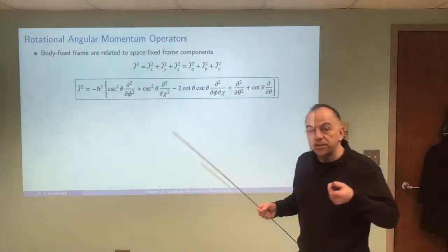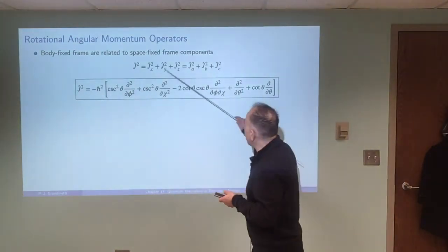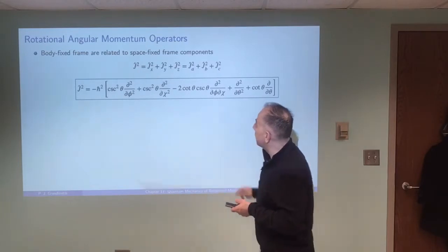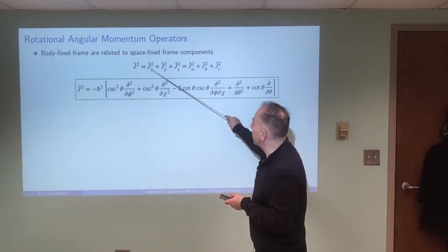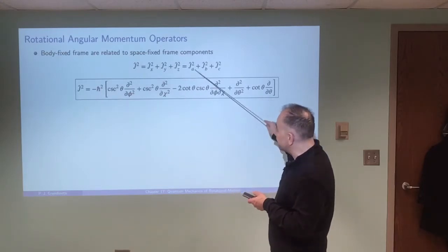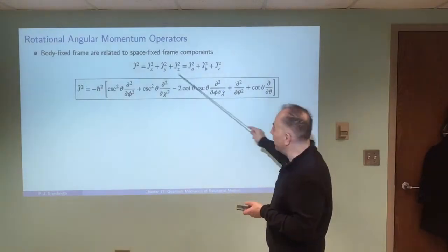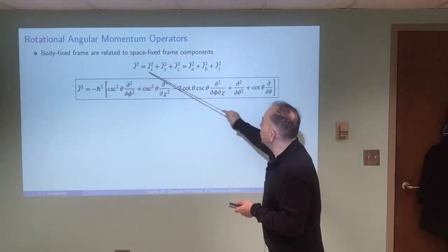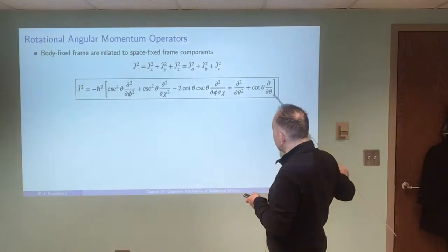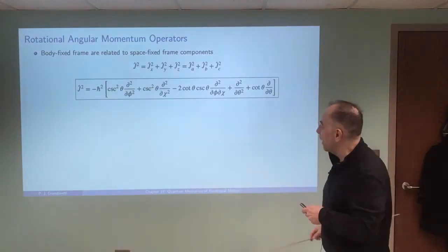Those components describe exactly the same vector quantity, and so they will have to be related to the total length of the vector. We know that J_X² + J_Y² + J_Z² = J², and similarly J_A² + J_B² + J_C² = J². You can use either formula along with the equations from the previous page to get the operator for J².